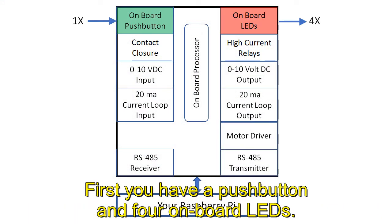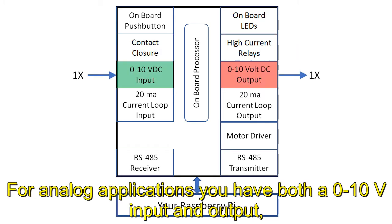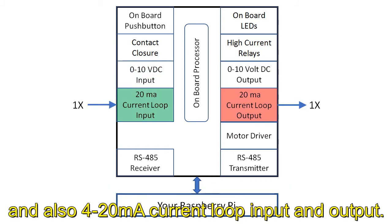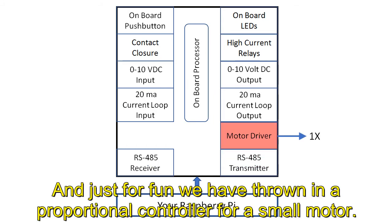First, you have a push button and four onboard LEDs. Next, you have four inputs to detect contact closures and two high-current relays. For analog applications, you have both a 0-10 volt input and output, and also a 4-20 milliamp current loop input and output. An RS-485 transceiver lets you connect to other remote devices. And just for fun, we have thrown in a proportional controller for a small motor.